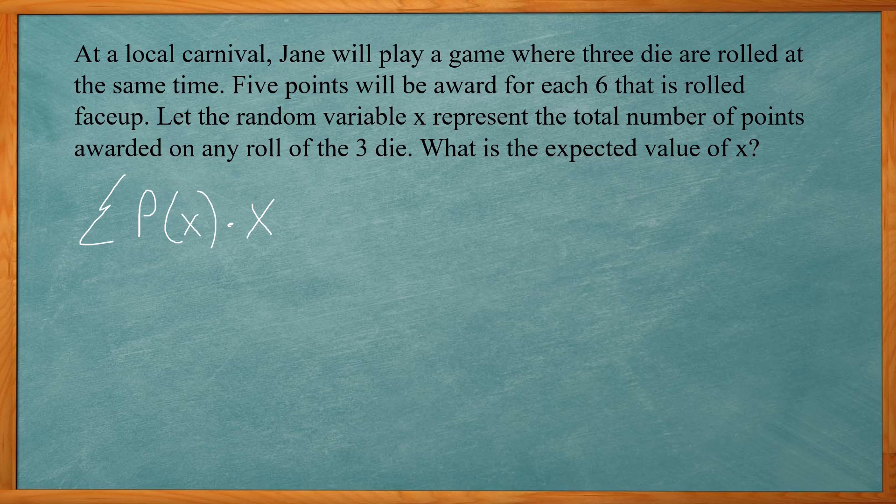So here, if you roll a six, you get five points. If you roll anything else, you get zero. So the probability of getting a six - now there's six sides to a dice, one through six. So a six would be one out of six, and the value that you get for it is five points.